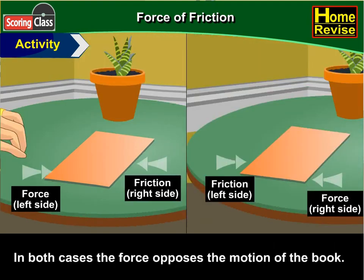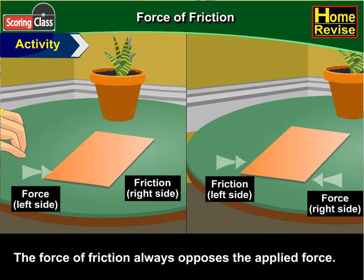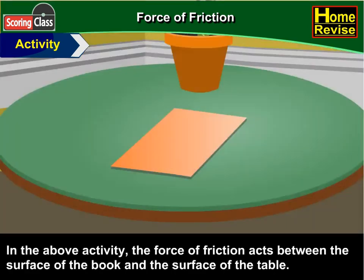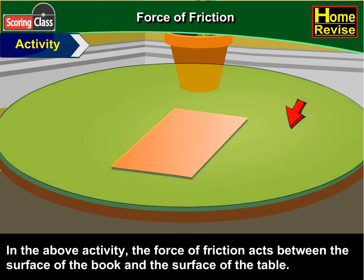In both cases, the force opposes the motion of the book. In fact, the force of friction always opposes the applied force. In the above activity, the force of friction acts between the surface of the book and the surface of the table.